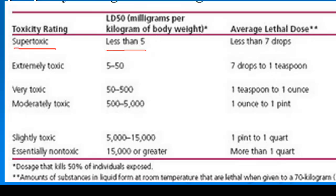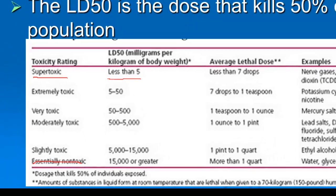Whereas something would be considered essentially non-toxic if it took about 15,000 milligrams per kilogram of body weight, or more than a quart per dose, to kill 50% of the population. That would be things like water or table sugar.